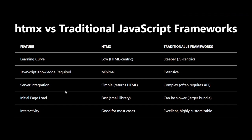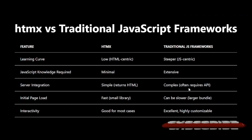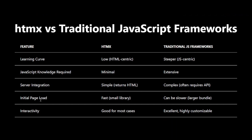Server integration: HTMX simplifies server integration — your server just needs to return HTML fragments. Traditional frameworks often require complex API setups, returning JSON or other data formats. Initial page load: HTMX is a small library, leading to faster initial page loads. Traditional frameworks can have larger bundle sizes, potentially slowing down initial loads.